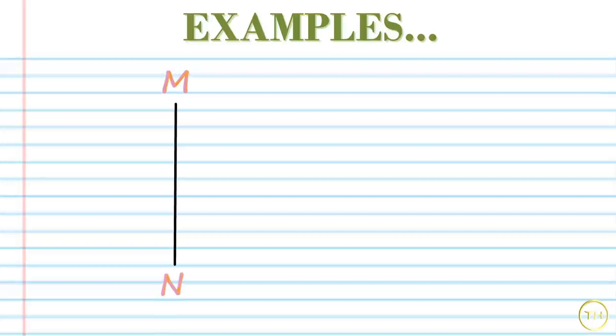A line segment has two points showing its limits. They are called endpoints. We write line segment M, N as segment M, N. In short, M and N are its endpoints.